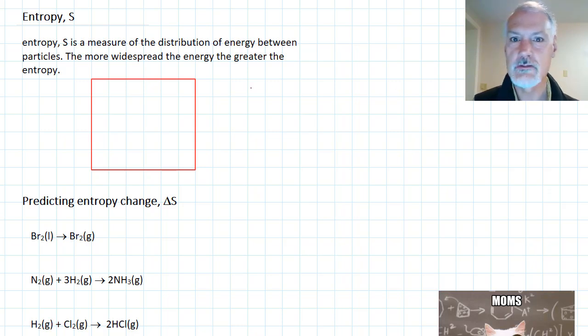Entropy is a measure of the distribution of energy in a system. The more widespread that energy is, the greater its entropy. We measure entropy in the unit of joules per kelvin. So entropy is joules per kelvin.